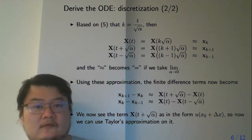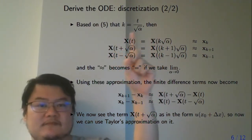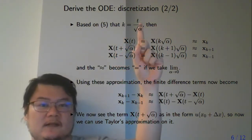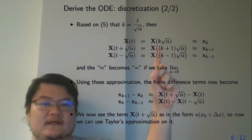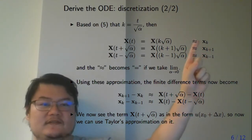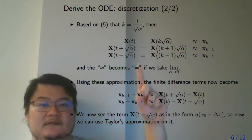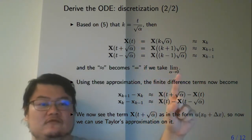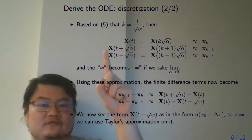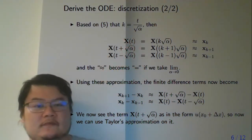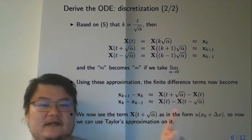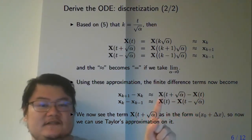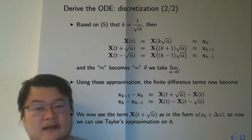Because of the linkage between discrete iteration and continuous time, the continuous variable at time t is equal to k times square root alpha, and we set this approximately equal to x_k. This approximation becomes exact as the step size alpha goes to 0. Similarly, we get two corresponding expressions. You can plug in all these approximations into the finite difference term, and then you get these expressions. This term and this term look like the Taylor expansion of the u function, which is why we apply Taylor's approximation.